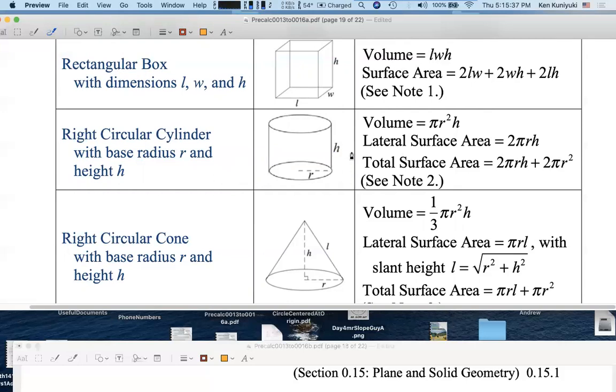Know the volume, which is like capacity. Lateral surface area - imagine a soup can. The lateral surface area is like the area of the soup label on the soup can. The total surface area consists of the lateral surface area plus the area of the top lid and the bottom lid, the circles there. That's why you have the plus 2 pi r squared.